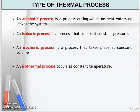Next, we look at the types of thermal processes. There are four types you need to know. First, an adiabatic process is one during which no heat enters or leaves the system. Second, an isobaric process occurs at constant pressure. Third, an isochoric process takes place at constant volume. Finally, an isothermal process occurs at constant temperature.